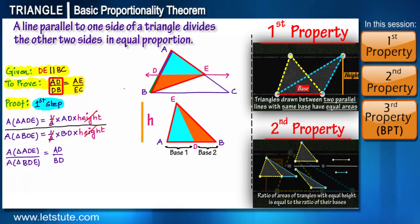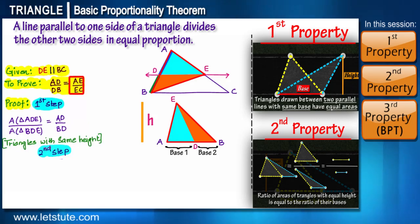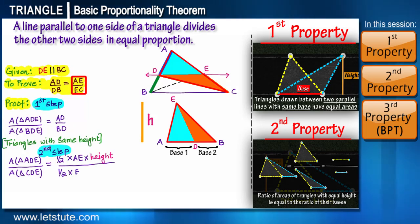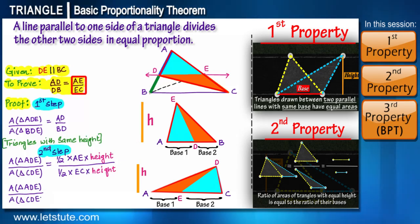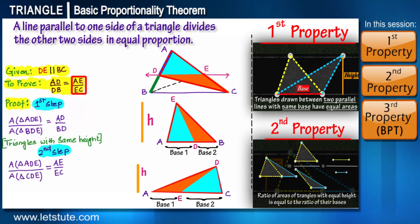That is our first step. For Step 2, we see sides AE and EC. By joining line segment DC and following the same steps for triangles ADE and CDE, we can write: area of triangle ADE upon area of triangle CDE equals AE upon EC, again by cancelling the constant one-half and the equal heights.